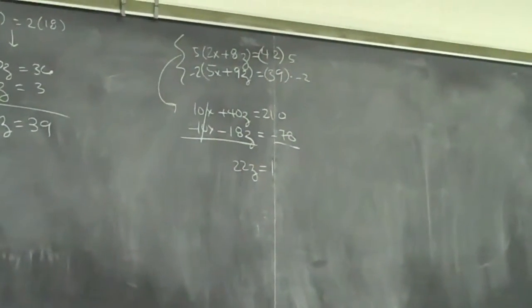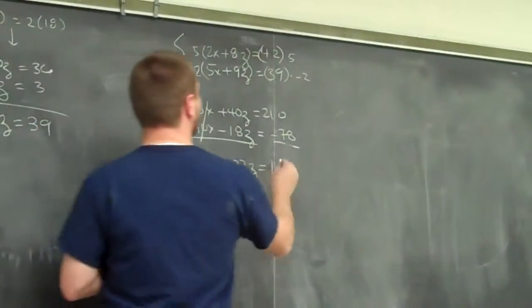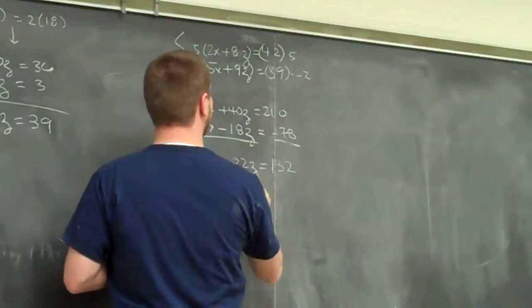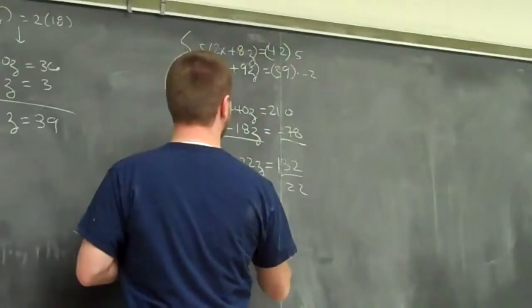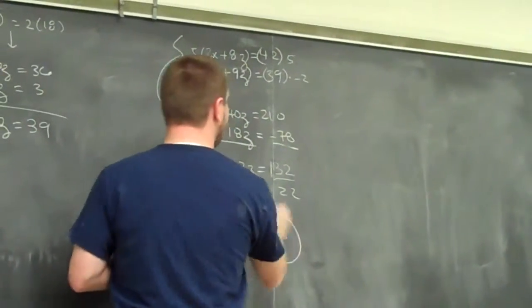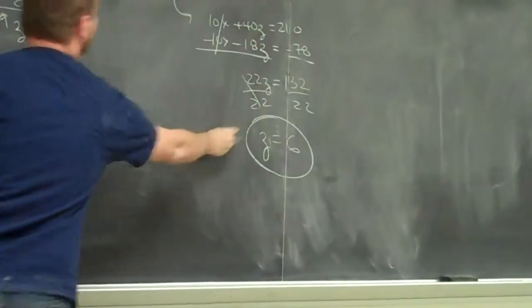What is it? And once I divide that 22 off, I get z equals 6, and that's the first of my three numbers, and now I start working backwards.